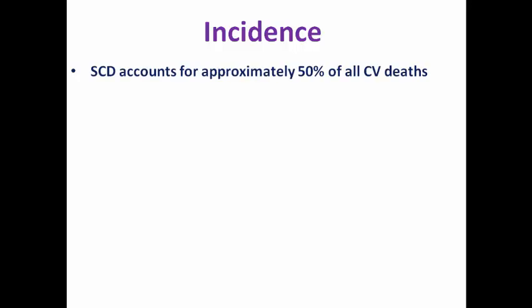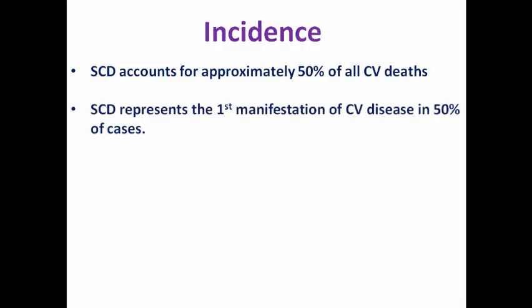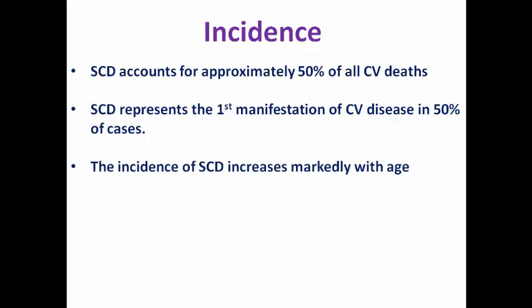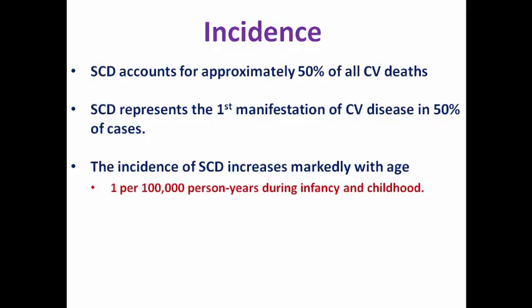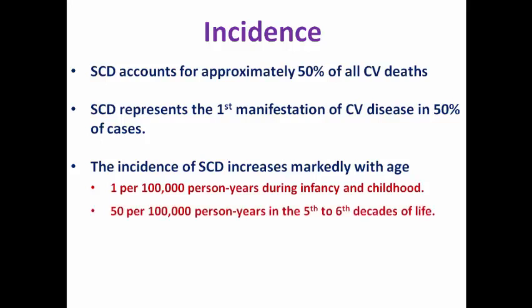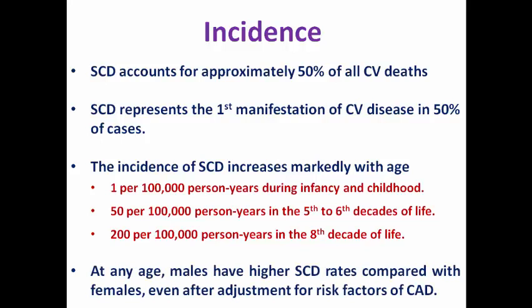Regarding the incidence of sudden cardiac death, it accounts for about 50% of all cardiovascular deaths and represents the first manifestation of cardiovascular disease in 50% of cases. The incidence increases markedly with age — from 1 per 100,000 persons per year during infancy and childhood, rising to 50 in the fifth and sixth decade, and then 200 in the eighth decade of life. At any age, males have higher rates of sudden cardiac death compared with females, even after adjustment for coronary artery disease risk factors.